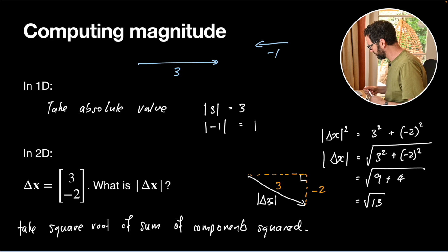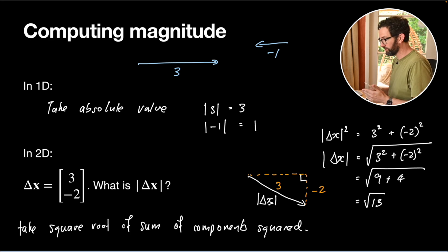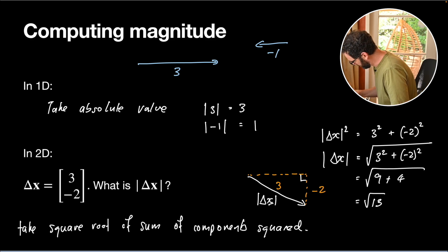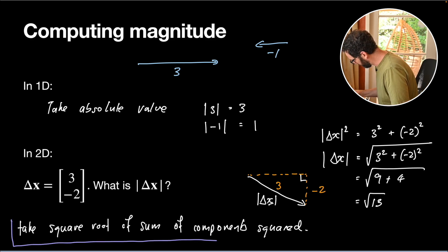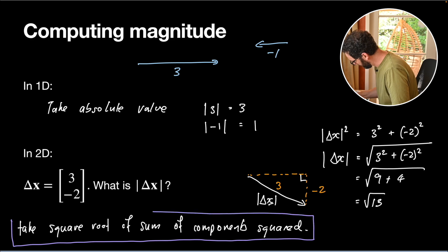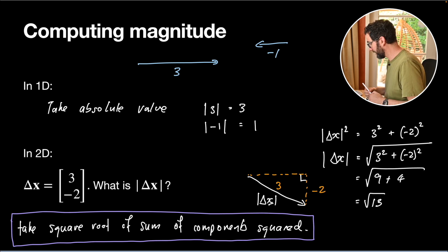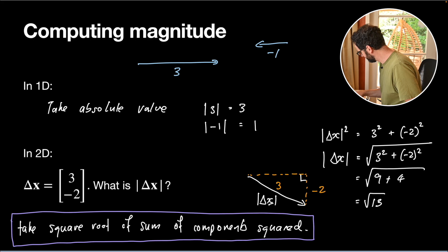This formula works in three dimensions or whatever — it's Pythagoras's theorem extended to higher dimensions. If you remember it as taking the square root of the sum of all components squared, that will always give you the magnitude of your vector. We'll defer anything about angles for a later date. That's about enough — we'll leave our discussion of vectors here for now. Ka kite anō.